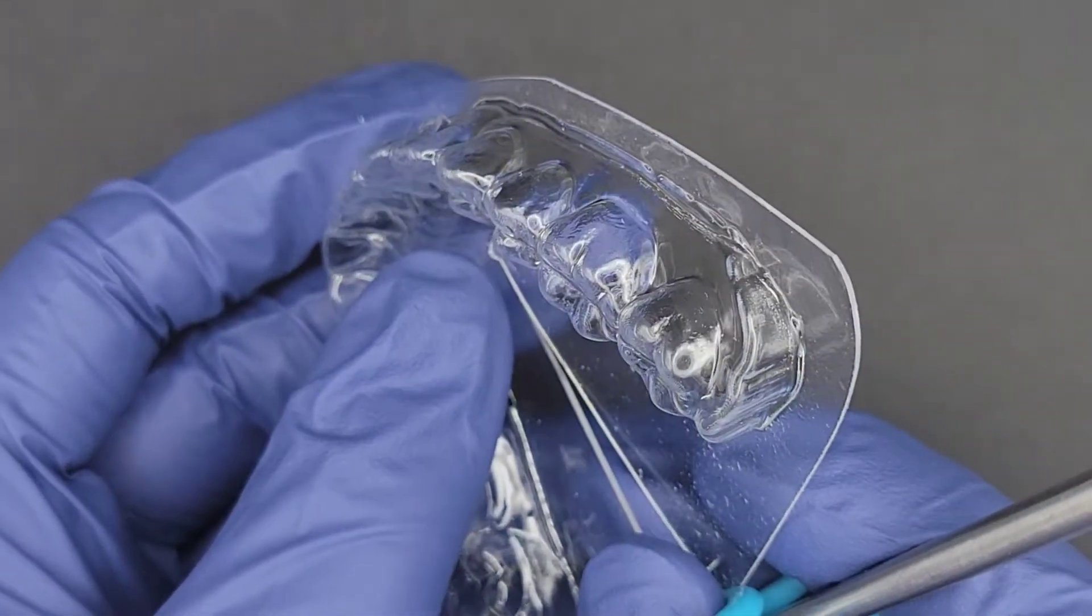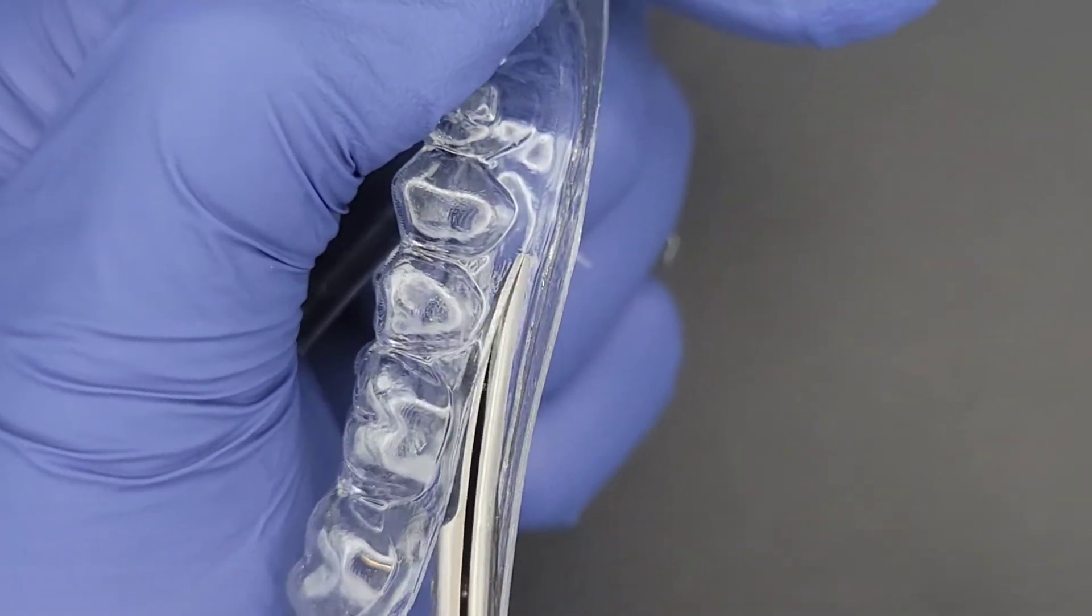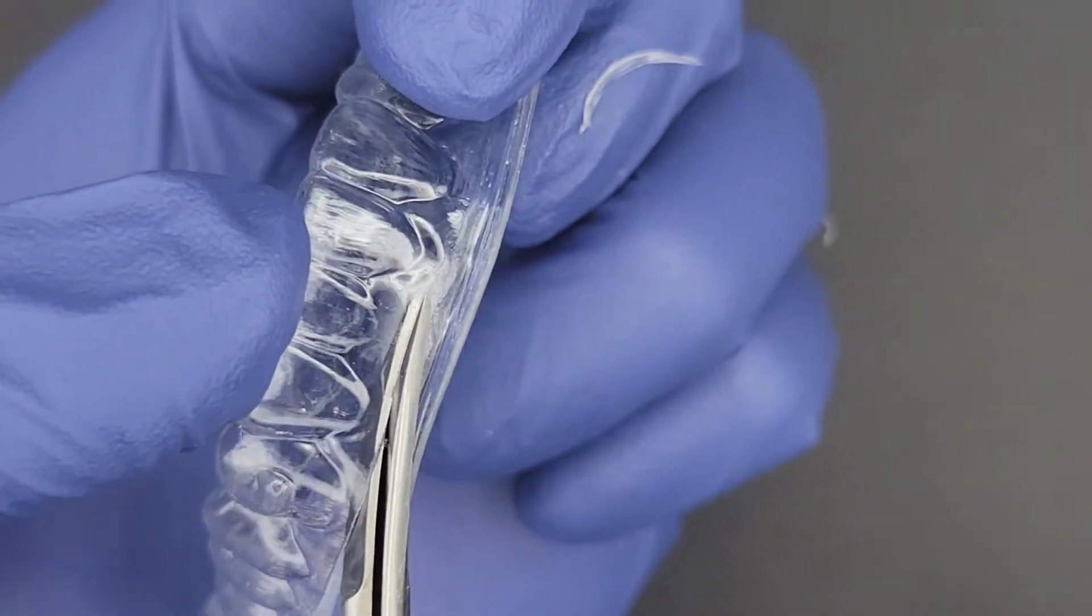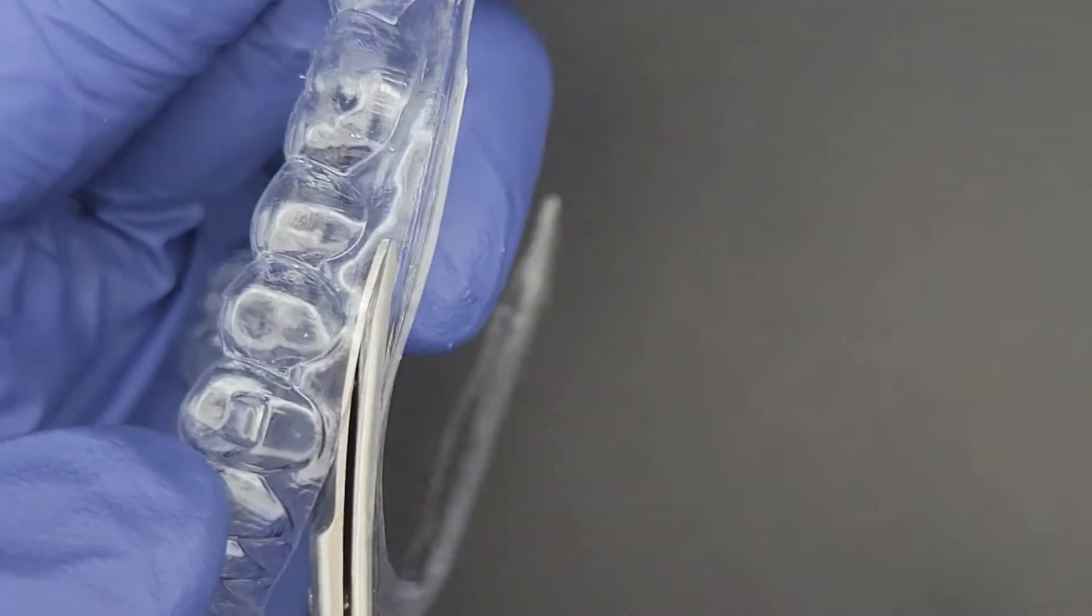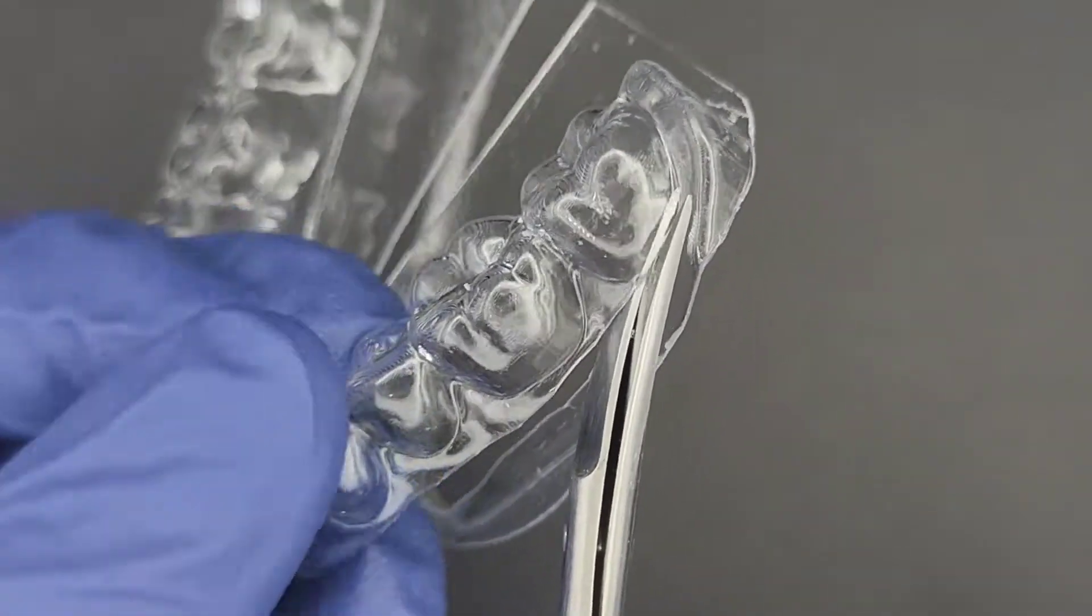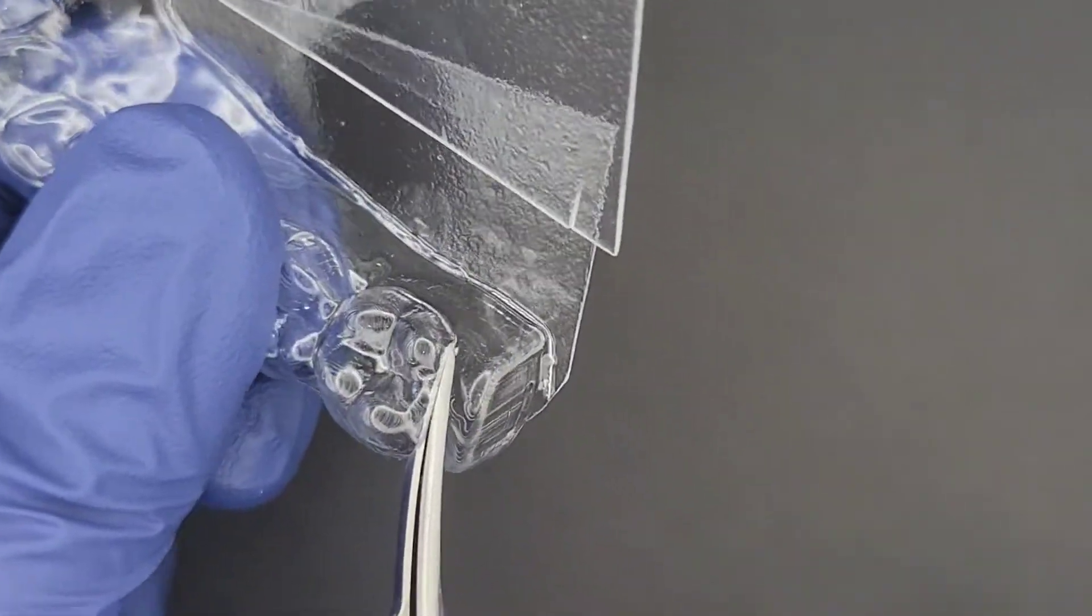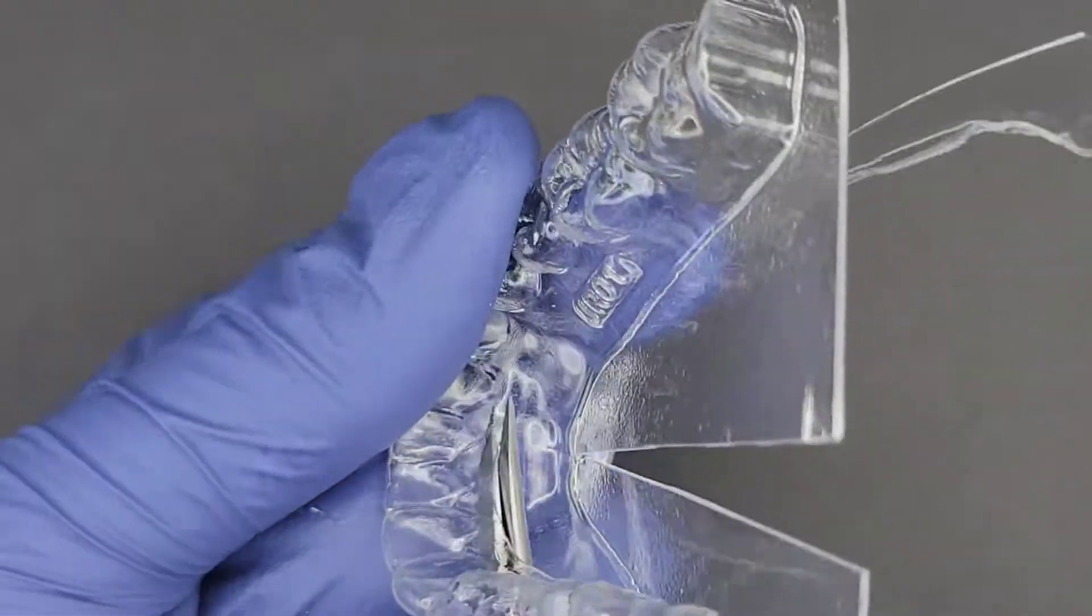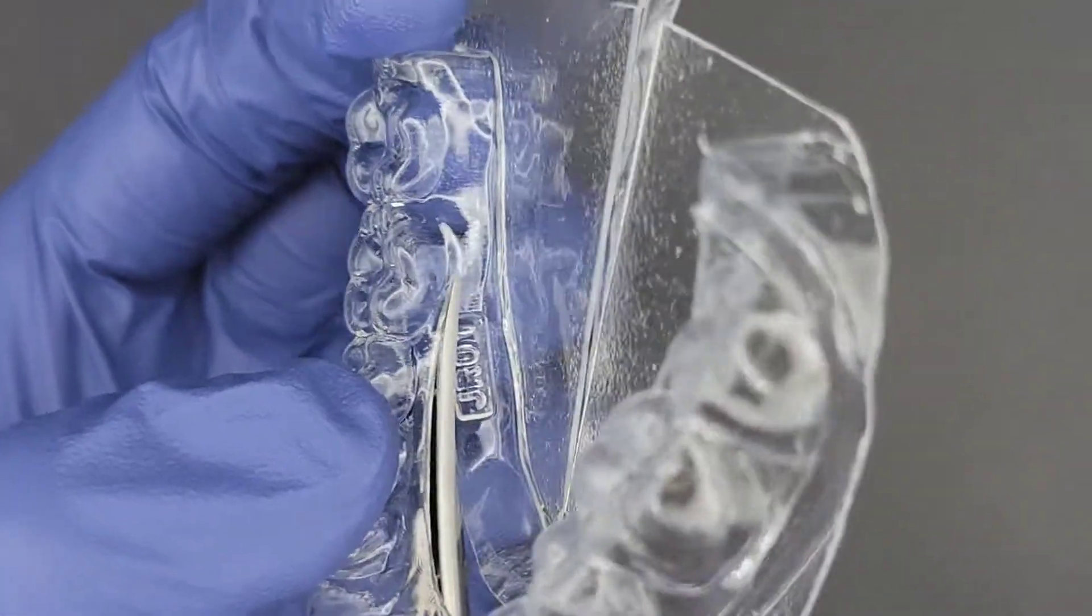Here is the lower arch. Make sure to trim away this part of the gum here on the back molar. And you can trim closer to the teeth on the lingual side of the teeth here as well. I'm still cutting without closing my scissors completely.